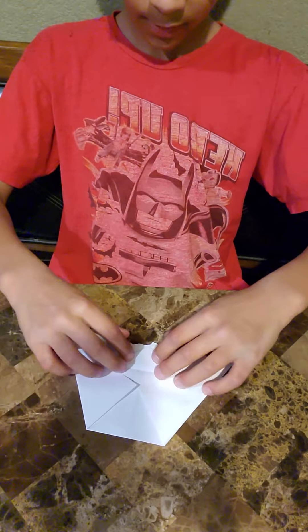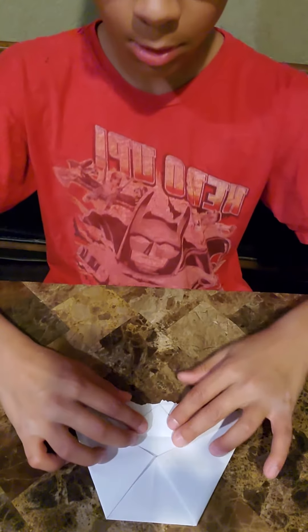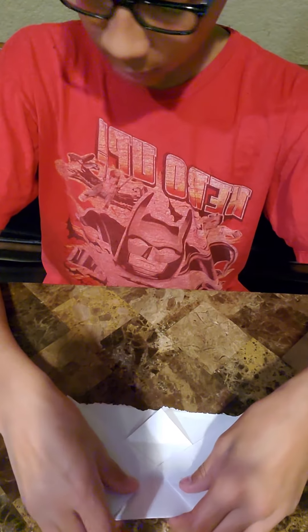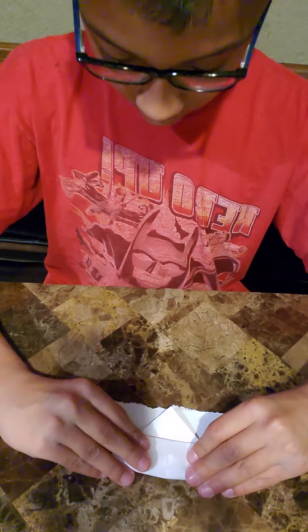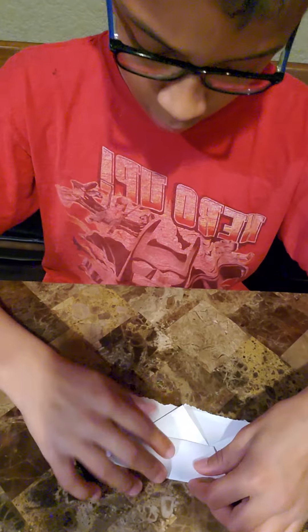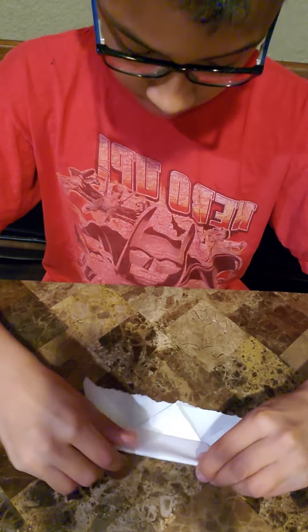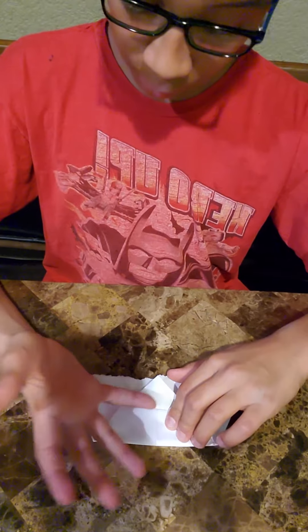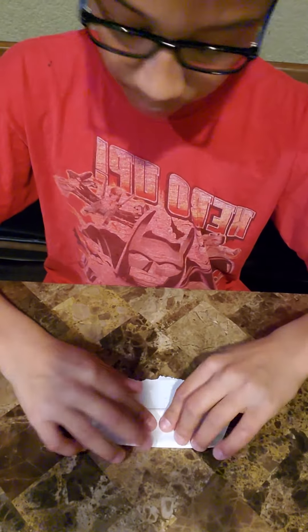And then, fold that down. And, now the next step is to grab this, and fold it down to, like, around this much, about like this. Then, you grab your, I guess, triangle flap, and fold that up.